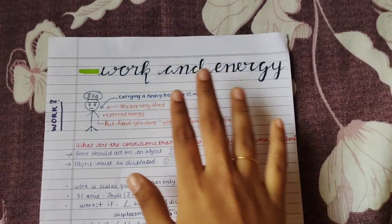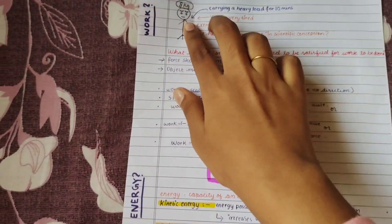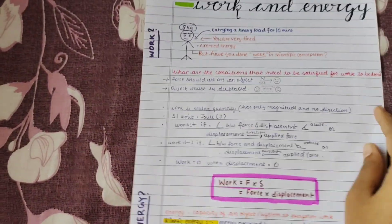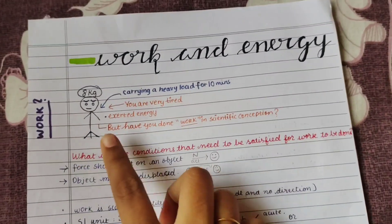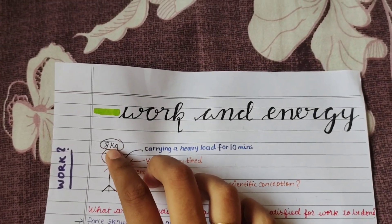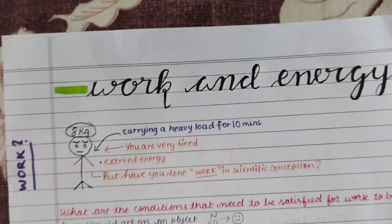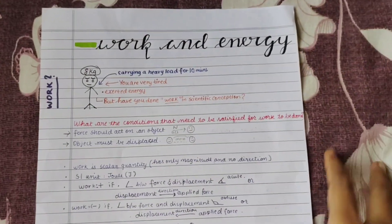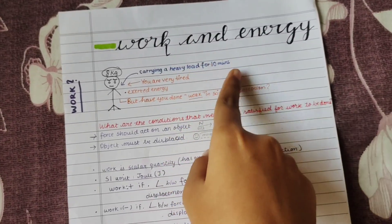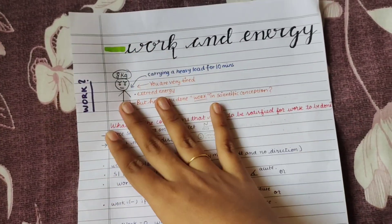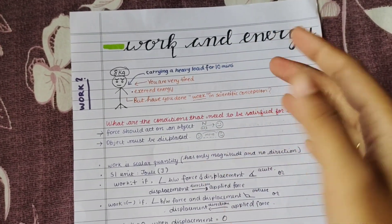Now I've got the notes here. The first thing is the heading — Work and Energy — and in this chapter there are three main concepts: work, energy, and power. The subheadings are in the margin in purple color. The first thing we see on the notes is a little man with '8 kg' on his head — this is an example from the NCERT textbook. All my examples are from the NCERT textbook, and I've also taken some references from Oswal.